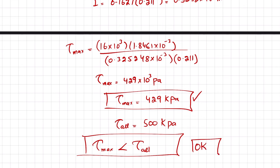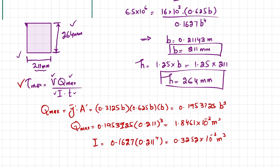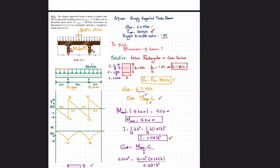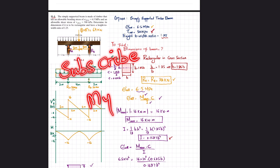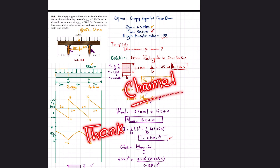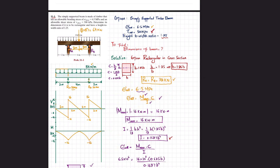The rectangular beam with b equals 211 millimeters and h equals 264 millimeters satisfies both the bending and shear stress requirements. I hope you enjoyed this video. If you have any questions, ask in the comments. New viewers are requested to subscribe to the channel. Thank you.